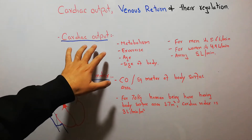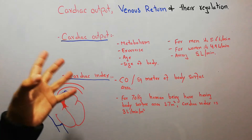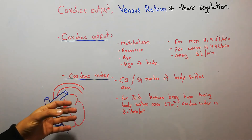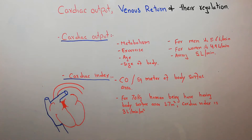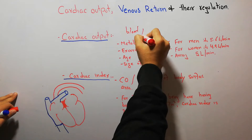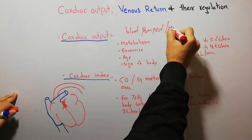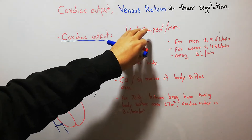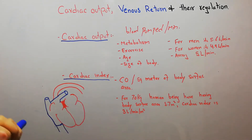So what is cardiac output? Cardiac output is simply the amount of blood that is pumped by the heart into the aorta per minute — the amount of blood pumped by the heart into the aorta each and every minute.